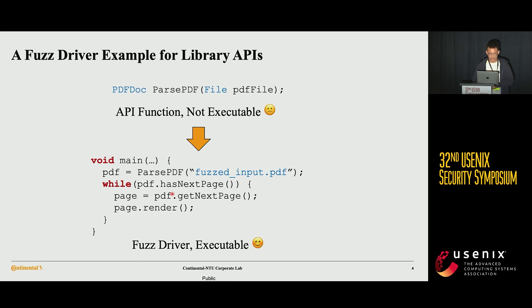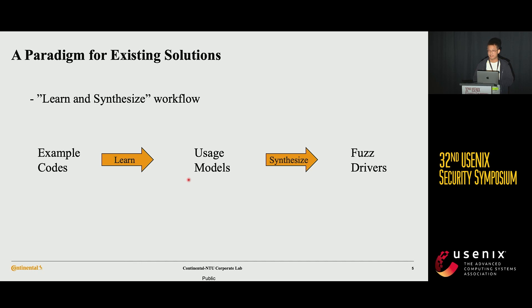Let us zoom in on an example fuzz driver for library APIs. As shown in the slide, there is an API function called parsePDF. A typical fuzz driver for this kind of API first parses the input PDF, gets a parsed PDF object, iterates all pages inside the PDF, and renders each page, trying to reach more testing of program behaviors. There are existing research works targeting automatic fuzz driver generation, such as Fuzzgen, Fudge, Apcraft, Winnie, Intelligent, etc. Given an API which needs a fuzz driver, their methods mostly follow a learn-and-synthesize paradigm, where API usage from example programs is first learned via static or dynamic analysis, and then used to synthesize the fuzz drivers.